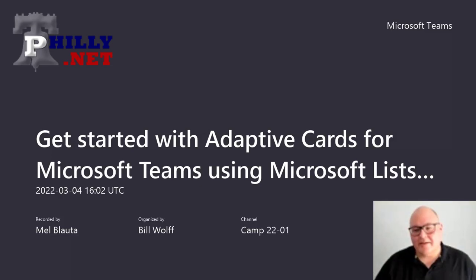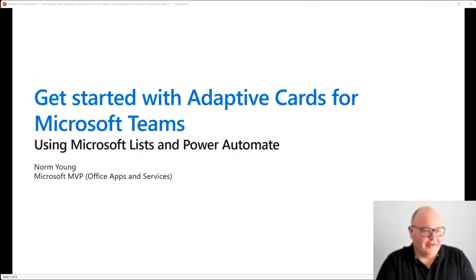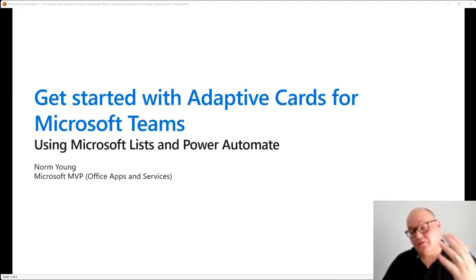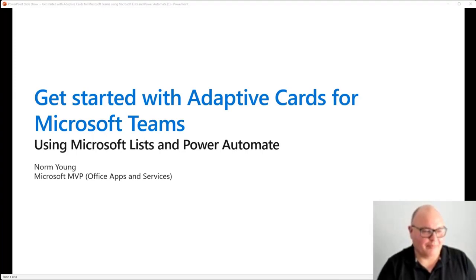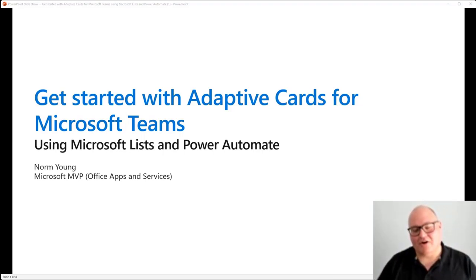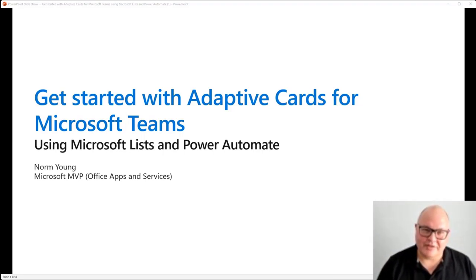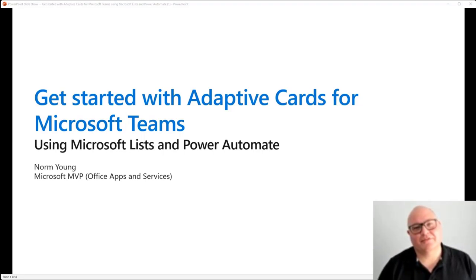Thank you for taking time out of your day to come learn more about adaptive cards for Microsoft Teams, and getting started with them. I'll be showcasing Microsoft Lists and Power Automate along the way. My name is Norm Young. I'm a Microsoft MVP in the Office Apps and Services category, which essentially means SharePoint.